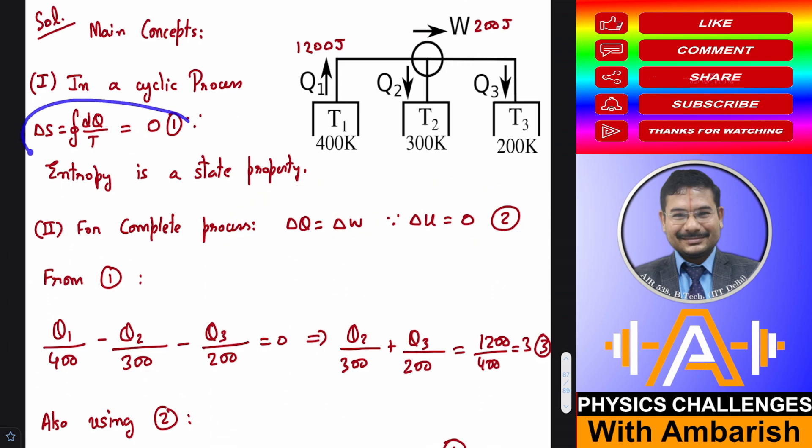So let me just use the condition that's given by equation one integral DQ by T is zero. So here if you see the working fluid is absorbing Q1 amount of heat at 400 Kelvin. So what's the entropy change of the working fluid here? We can say Q1 divided by 400.